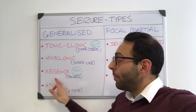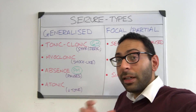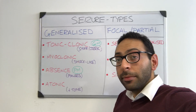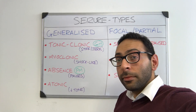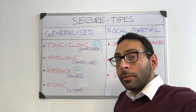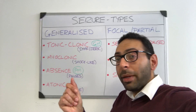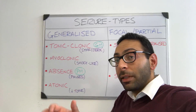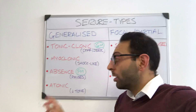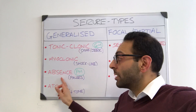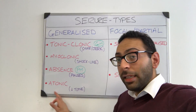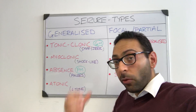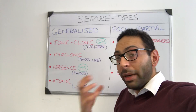Then you have your absence seizures, which often start in childhood, where someone is talking and then suddenly pauses and snaps back into action. These little pauses can be five to ten seconds but can go up to 30 seconds. Then you get atonic seizures, where someone has a sudden drop in tone and may fall down, with impaired consciousness.